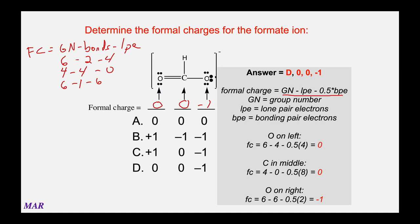You can also use the formula: group number minus lone pair electrons minus half of the bonding pair electrons. Either version works — just remember every bond is two electrons. Because that ion has a −1 charge, the sum of all formal charges must equal −1. Hydrogen is group 1 minus 1 bond equals 0. Only the single-bonded oxygen is −1, giving the ion its overall charge. We're good to go.